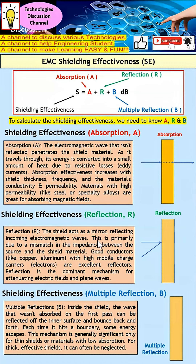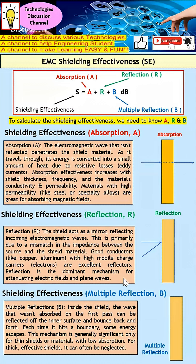Why do we have this reflection? This is mainly because of a mismatch — a mismatch of the impedance of the air and also the impedance of the material. Because there is a strong mismatch, reflection actually occurs. The key property here is that most of the time the choice of material will be a good conductor. With a good conductor, the majority of the wave will be reflected back, and hence this reflection method is actually very effective when we want to shield away the electric field and also the plane wave.